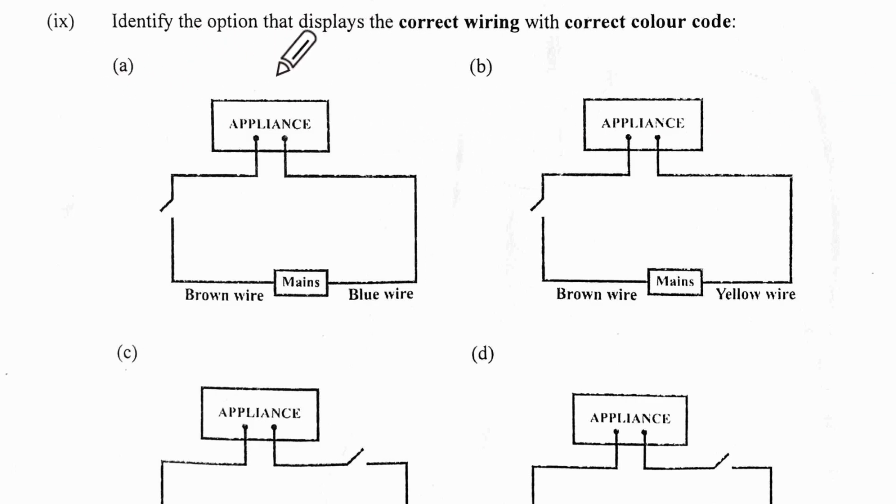Ninth one: identify the option which displays the correct wiring with correct color code. Brown wire is live, blue is neutral. Live is connected to the switch and to the appliance, and this will be the return part for the current. So this is the correct option. Now brown wire is here, this part is correct, but the return part is yellow wire. Yellow wire is not the correct code for neutral. Neutral means light blue.